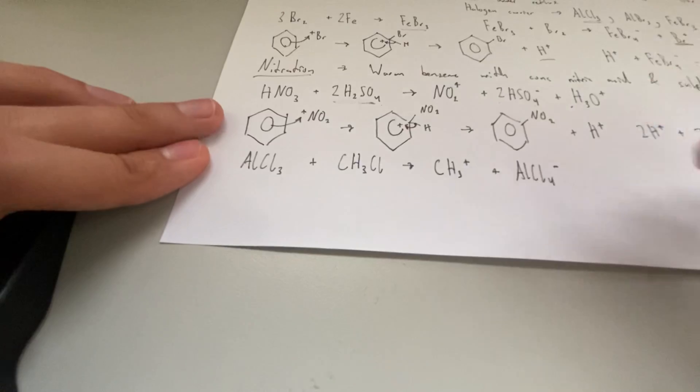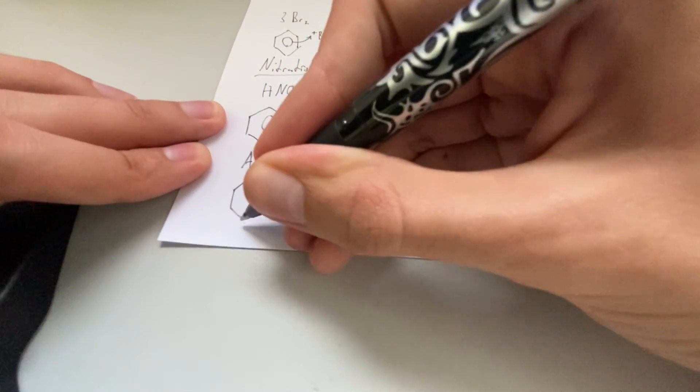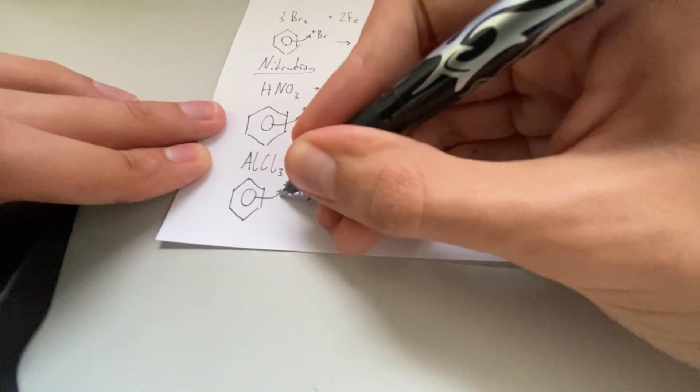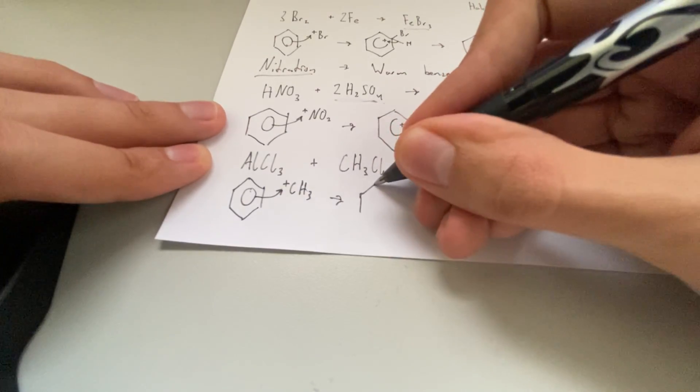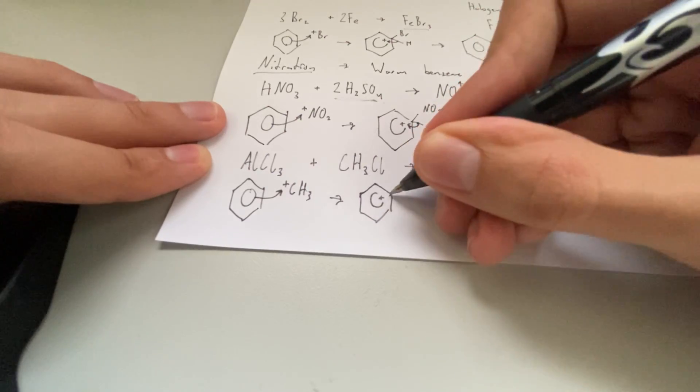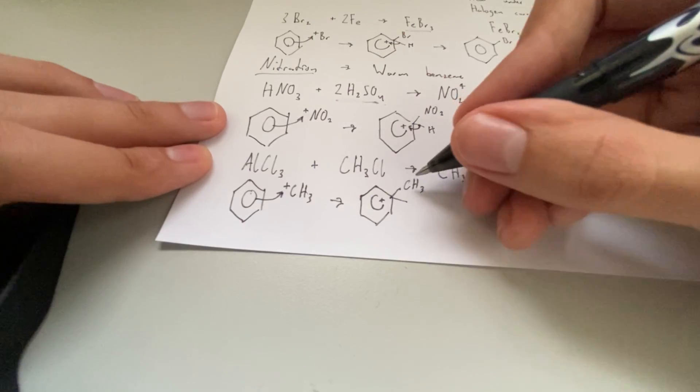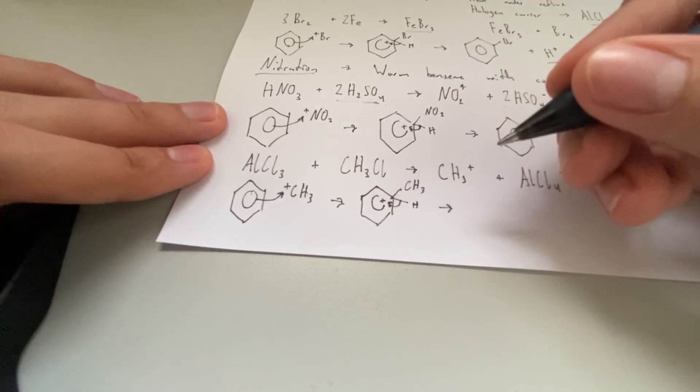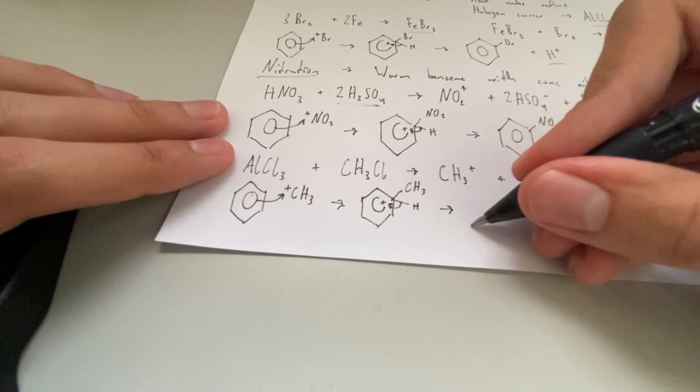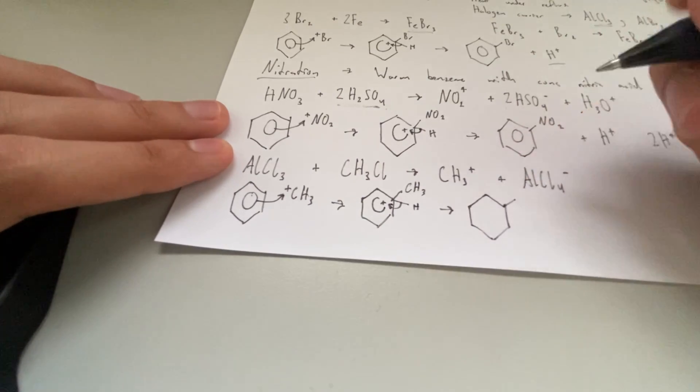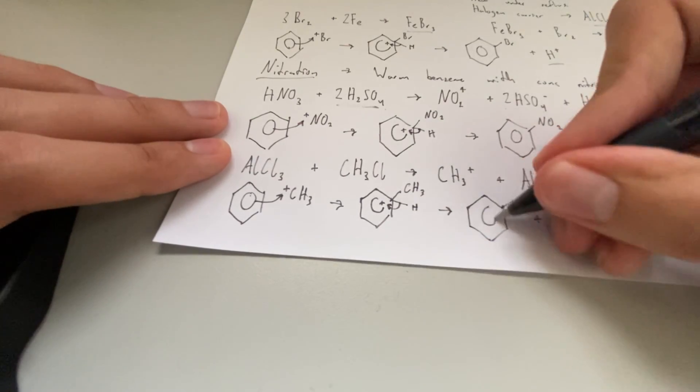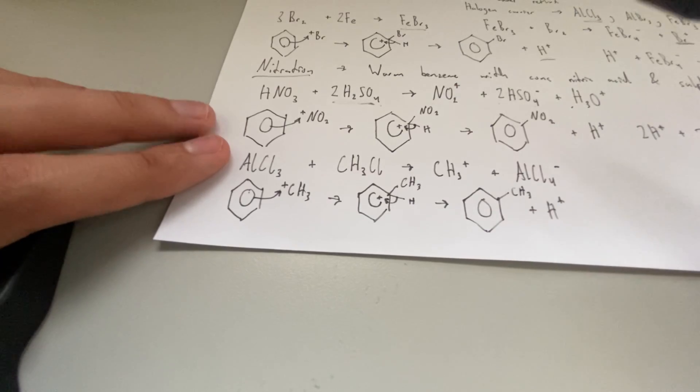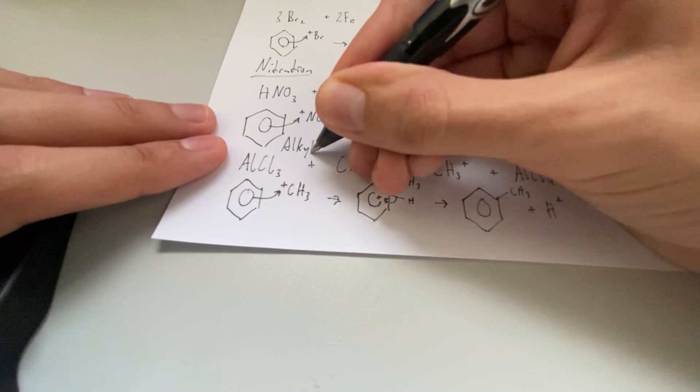So AlCl3 plus CH3Cl, our halogenoalkane. That's going to give us an electrophile. And this is going to react with the benzene ring. I'm going to end up with CH3, a methyl group. And of course, we have this hydrogen here that we always swap out so that we can get a full delocalized ring.